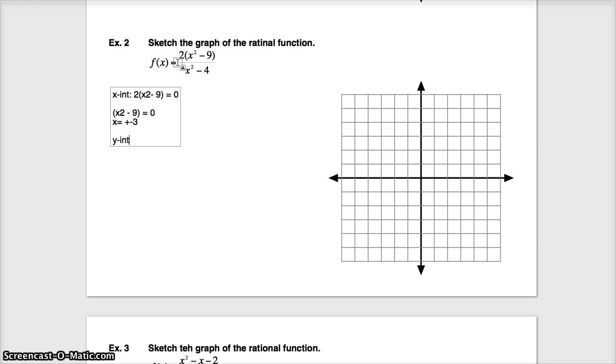Moving on, y-intercept. If you remember, to find the y-intercept, I set all my x's to 0 and see what number I get. And if I set all my x's to 0, I'm going to get 2 times 0 minus 9 over 0 minus 4. So if you do the math, what I'm going to get is a negative 18 over negative 4, or to simplify, I'm going to get 9 over 2. So now I have a y-intercept at 9 over 2. Some of you like decimals, so it's going to be 4 and a half.